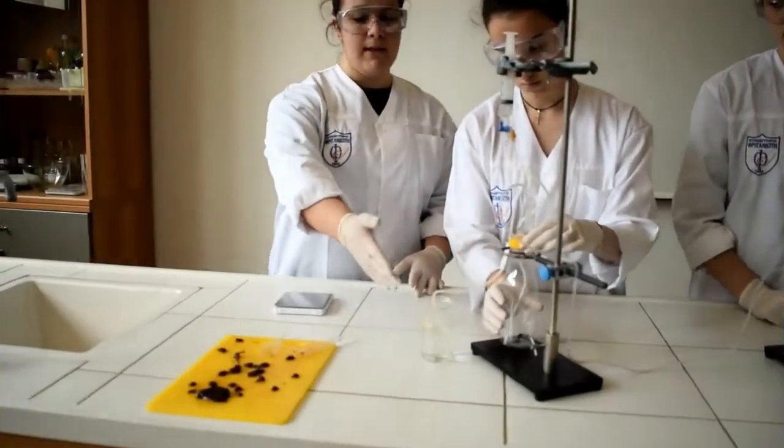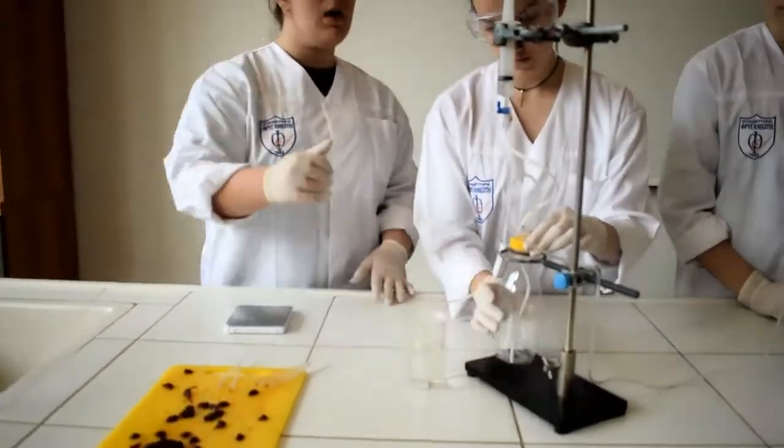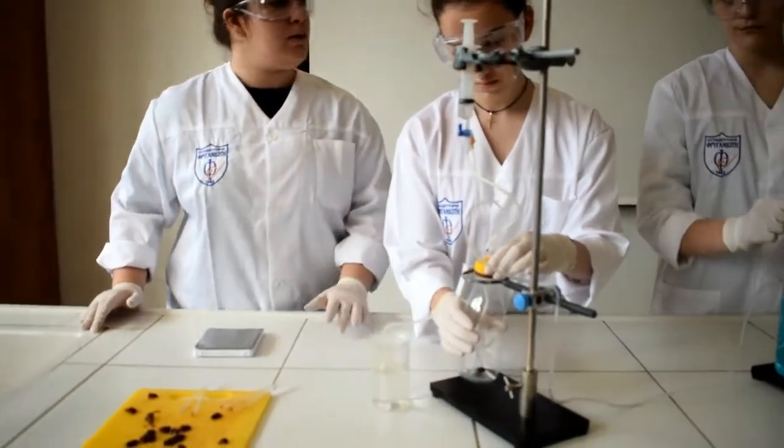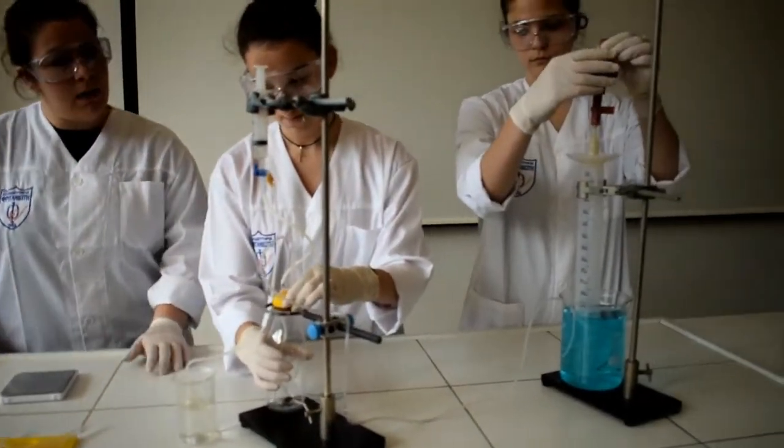100 milliliters of Peridrol are placed in the beaker. We use the bulb to fill the volumetric cylinder with colored water.